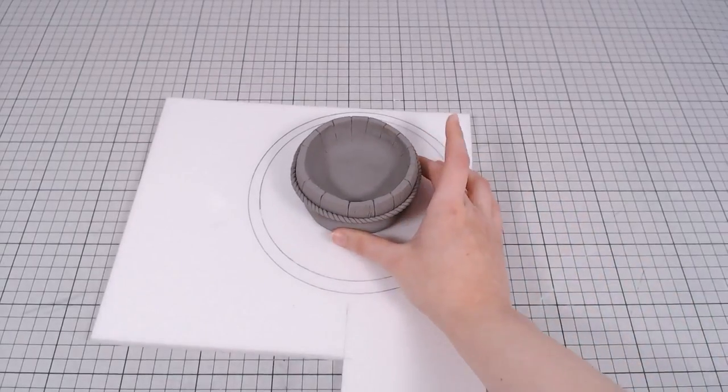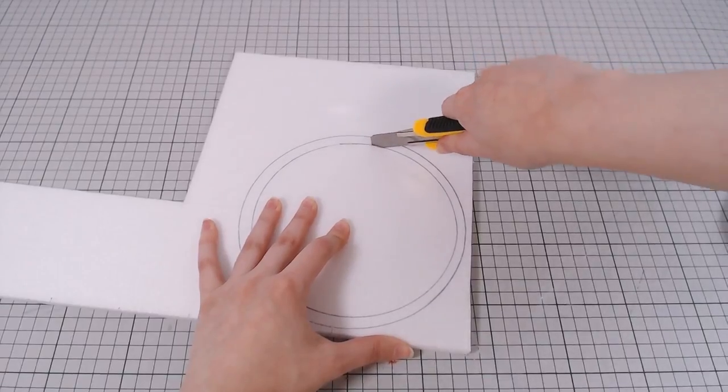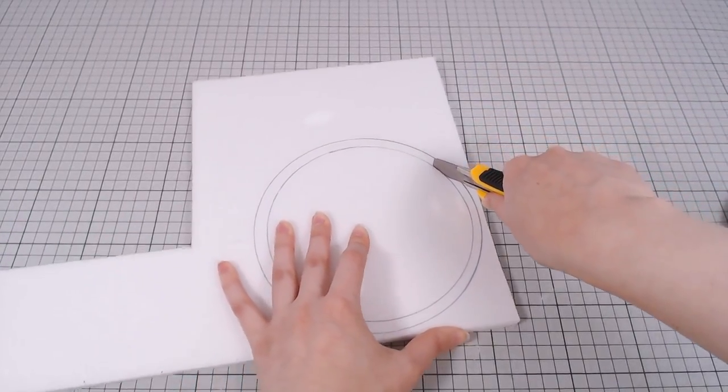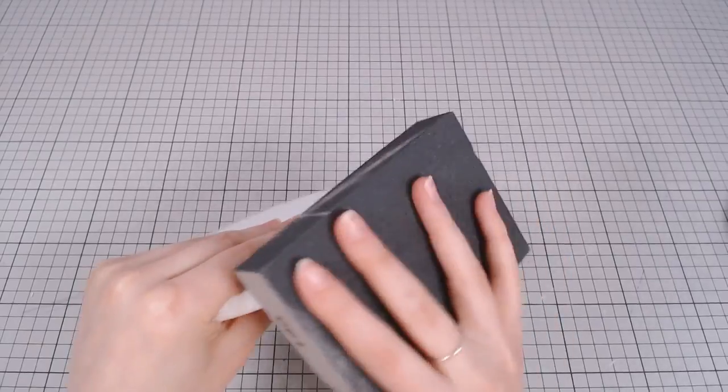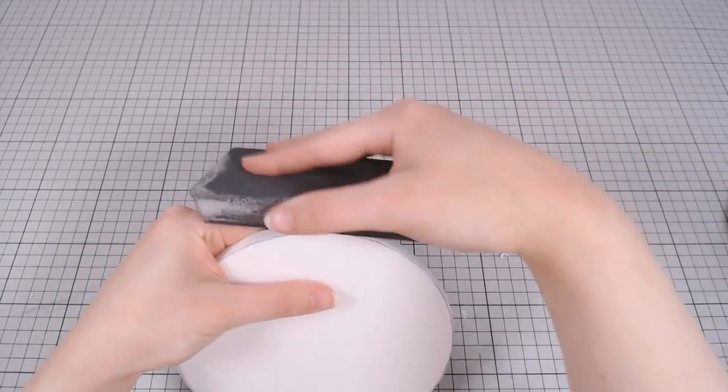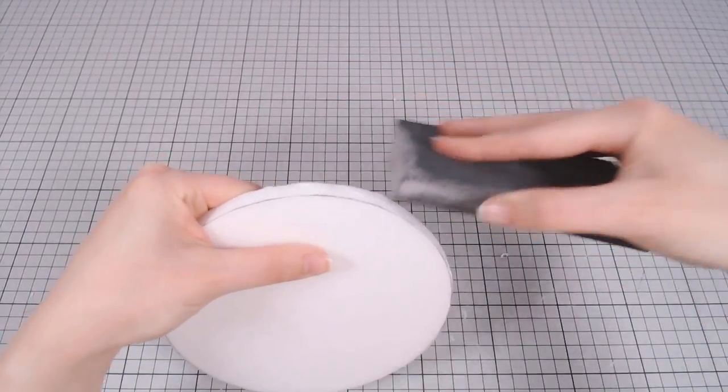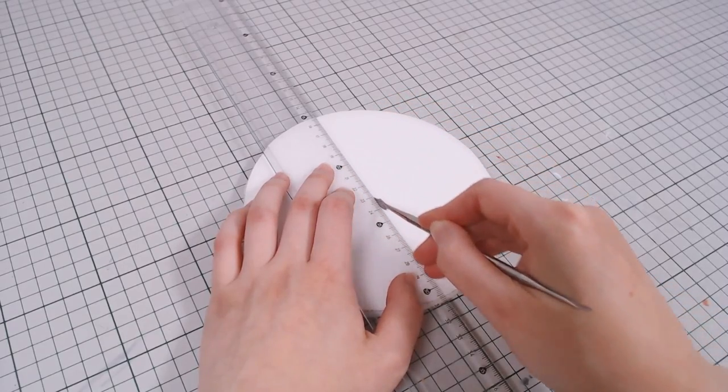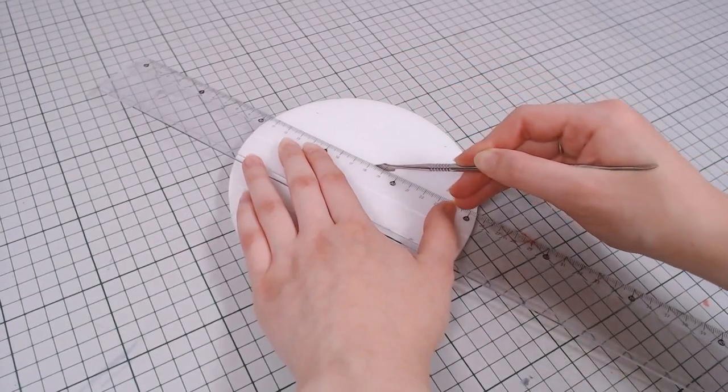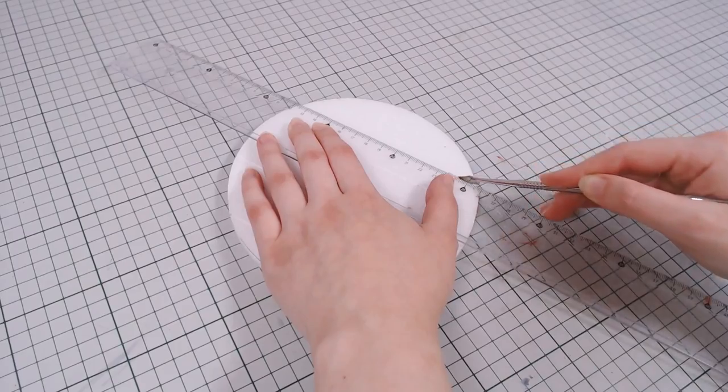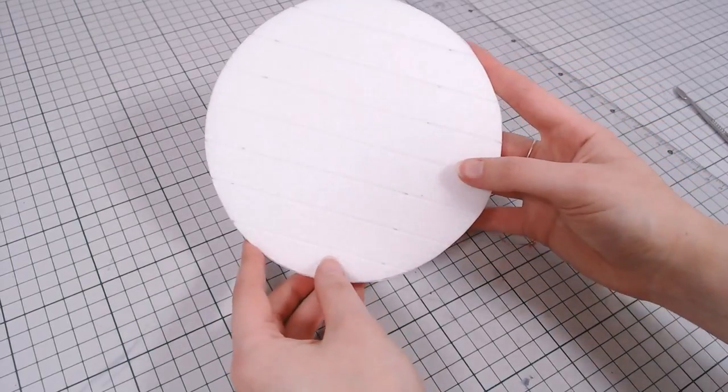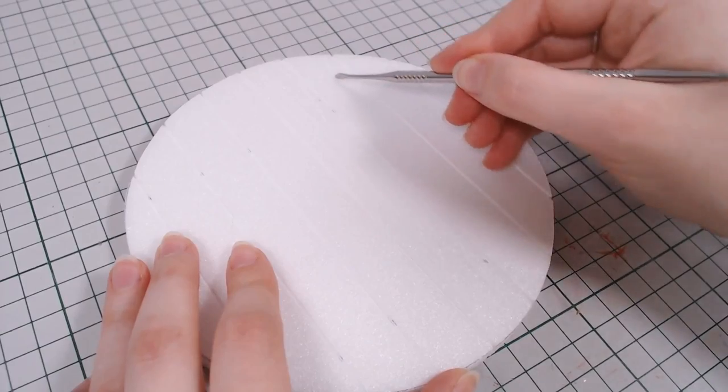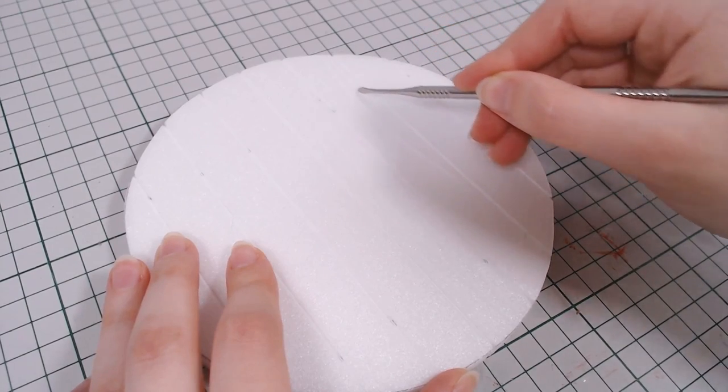I also need a base for the bathtub, so I'm making one with foam core. I cut out a round 10mm piece and then sanded the edges. Then with a metal tool, I'm drawing in some lines to make it a wood plank base, and also adding some wood grain texture the same way.